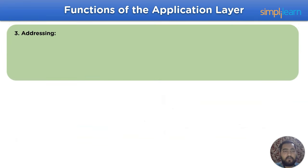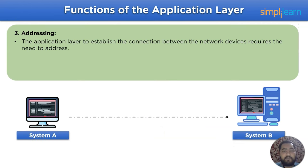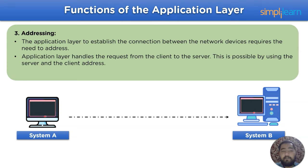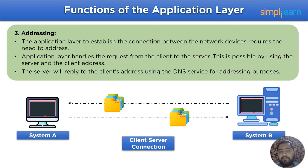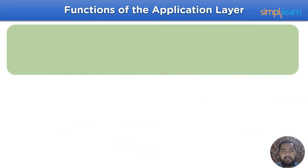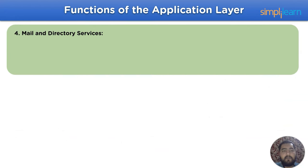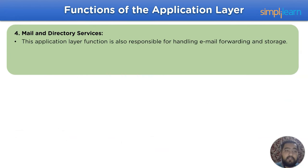The next function is addressing. The application layer, to establish the connection between network devices, requires access to addresses. It handles requests from the client to the server device. Using the server and client address, the server replies to the client address using the DNS service for addressing purposes.